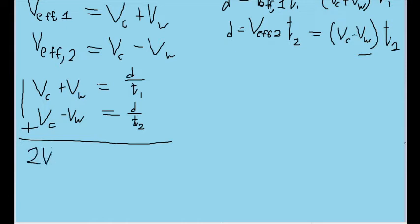So we add these together and we find two v_c, because v_c plus v_c is two v_c. The v_w's cancel out, and then we have d over t1 plus d over t2.